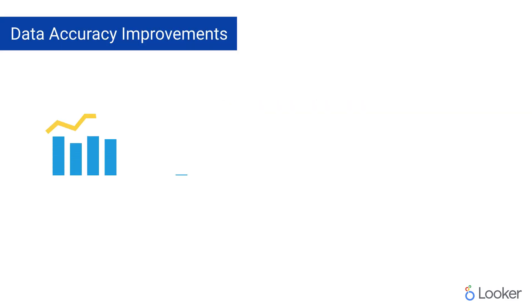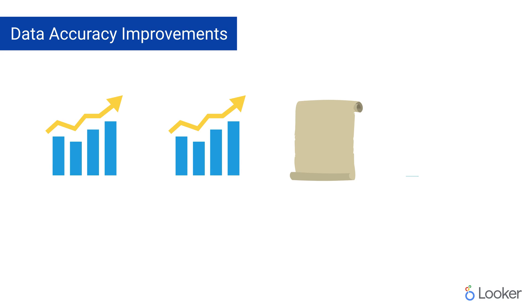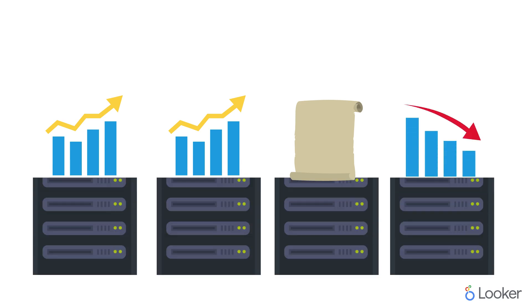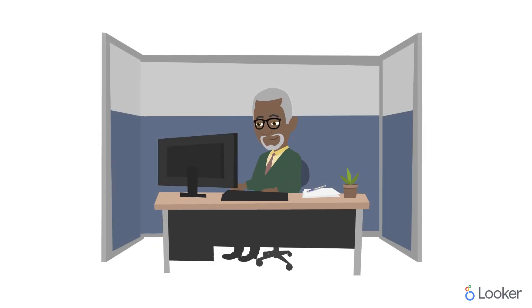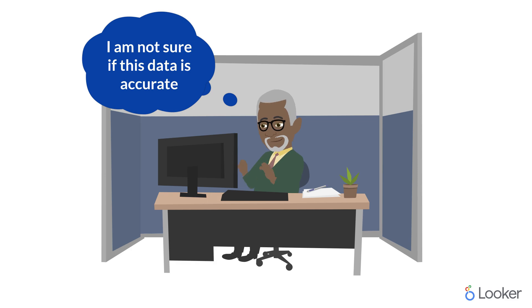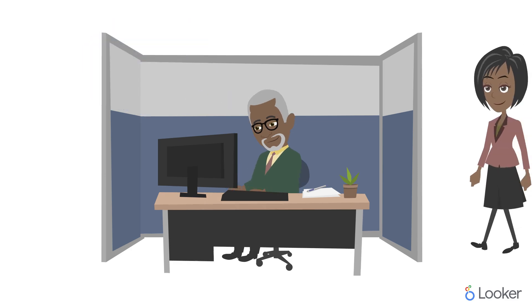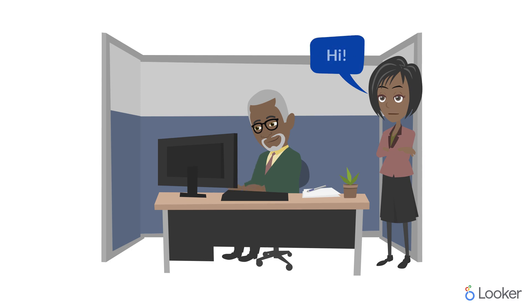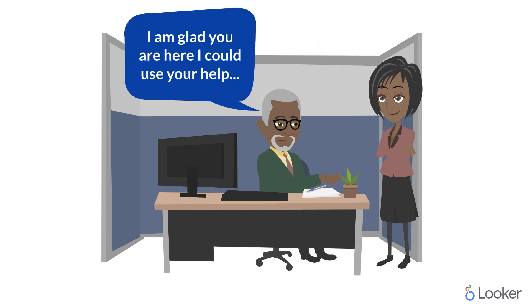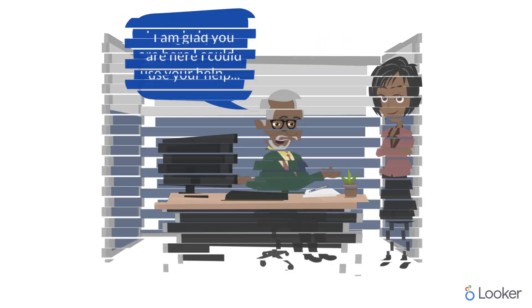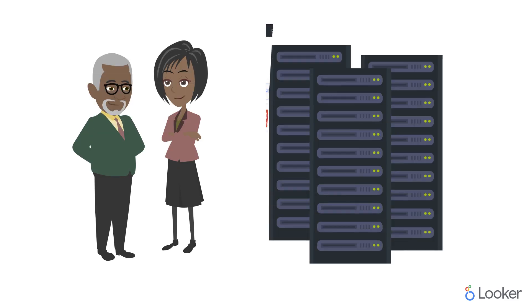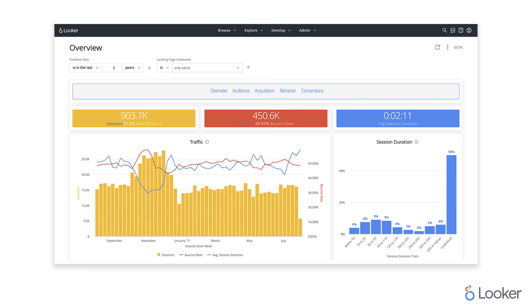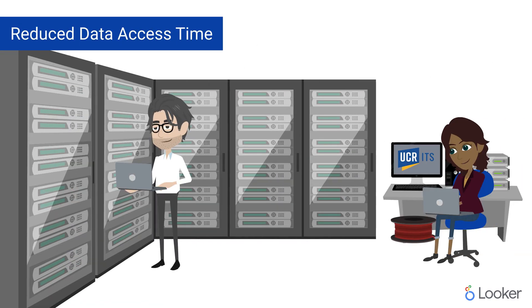At UCR, duplicated, out-of-date, and sometimes conflicting data is stored in different systems. This, coupled with a lack of agreed-upon business definitions for data, can lead to inaccuracies in trusted data. Given that there is no central system for housing and analyzing data, governance is highly reliant on individuals and their tribal knowledge. Reliance on individuals and disparate systems is reduced using Looker, which acts as a means to centralize data.